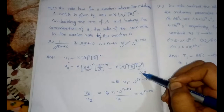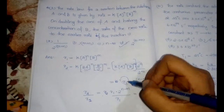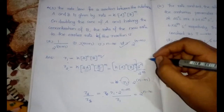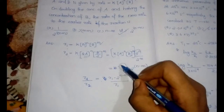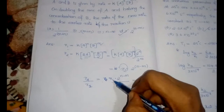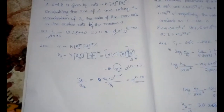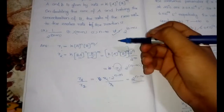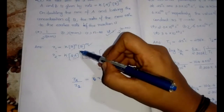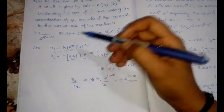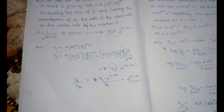Continuing, R₂ = k[A]ⁿ[B]ᵐ × 2ⁿ / 2ᵐ = R₁ × 2^(n−m). Therefore R₂/R₁ = 2^(n−m), which is option D. The strategy for these questions: write the new rate equation so that you can factor it in terms of the original rate R₁, making cancellation easy when finding the ratio.